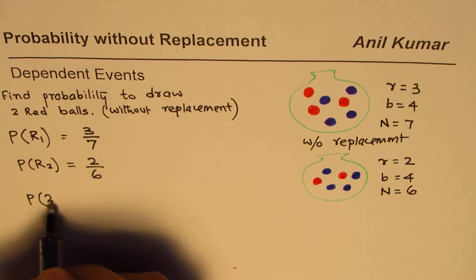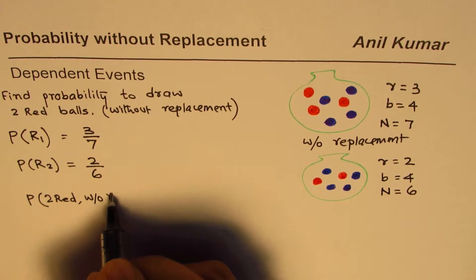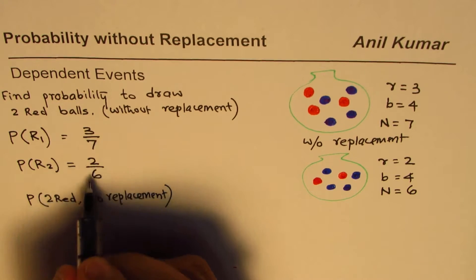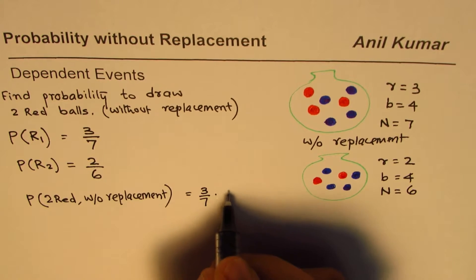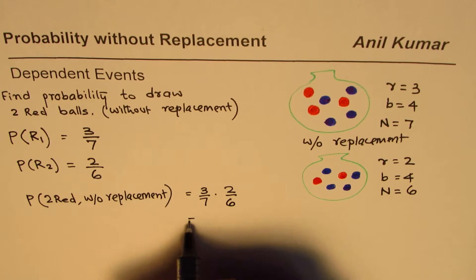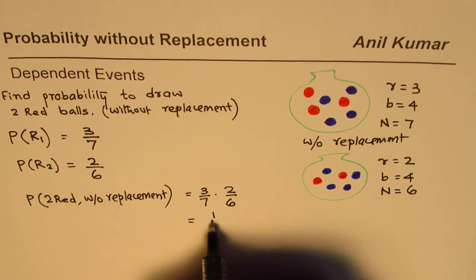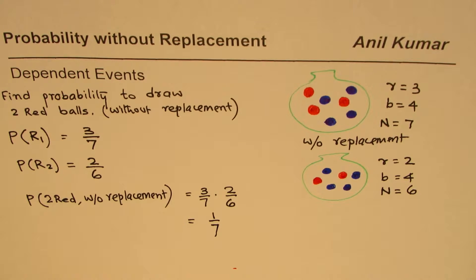The probability of picking two red balls without replacement is the product of the two probabilities: 3/7 × 2/6. Simplifying, three times two is six which cancels, giving us 1/7. So the probability of picking two red balls is 1 out of 7.